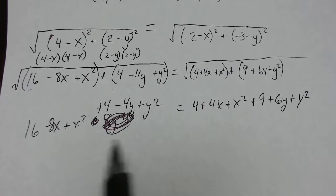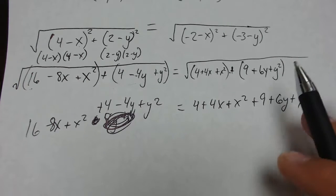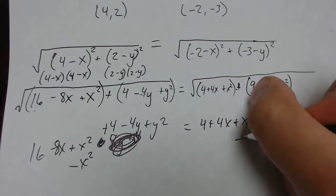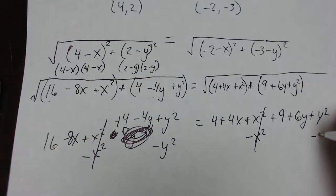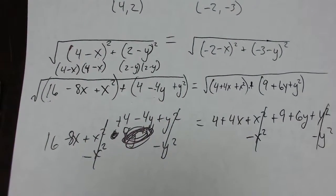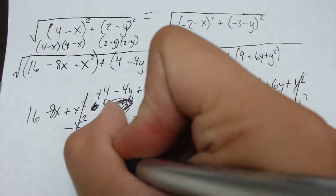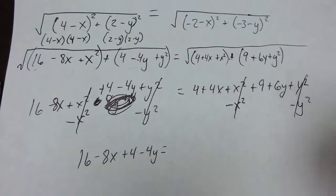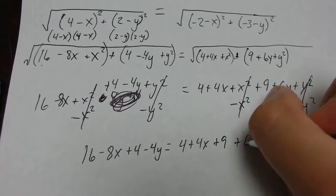This is a lot of polynomials to deal with, but I can simplify. If I subtract X² from each side, those cancel. Same thing with Y² — subtract Y² from each side and those cancel too. Writing it without the squared terms, the simplified equation becomes: 16 - 8X + 4 - 4Y = 4 + 4X + 9 + 6Y.